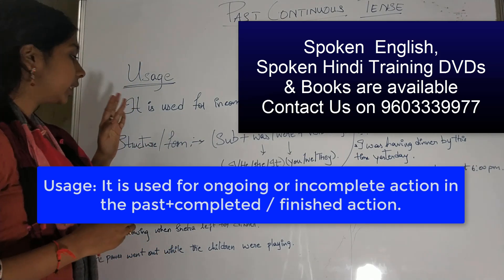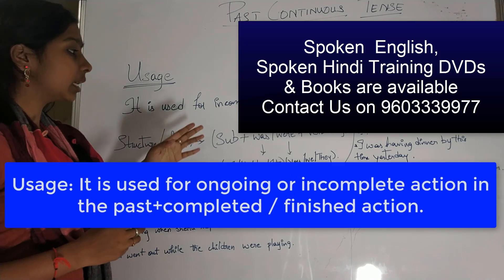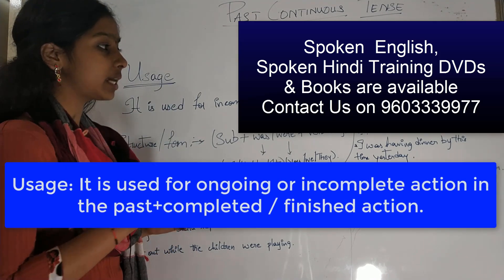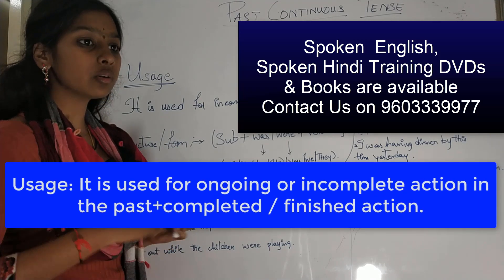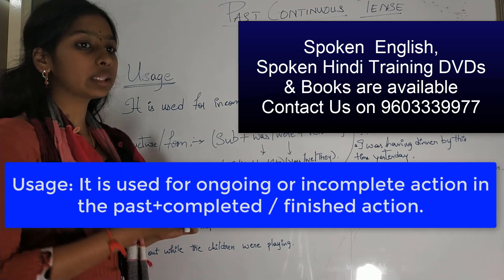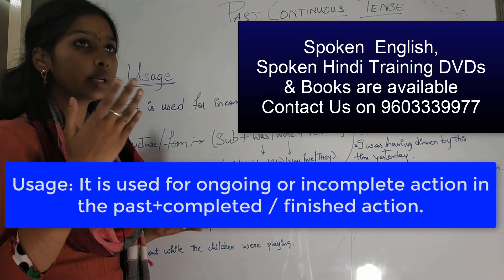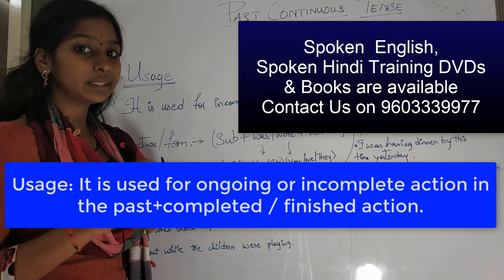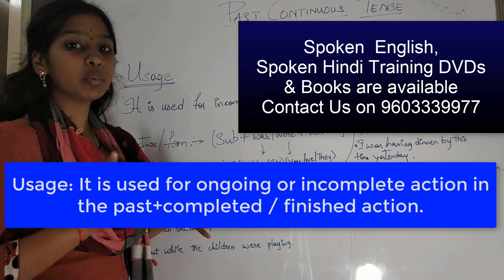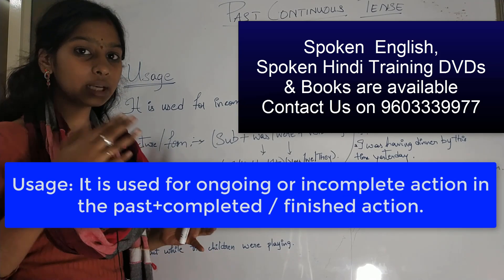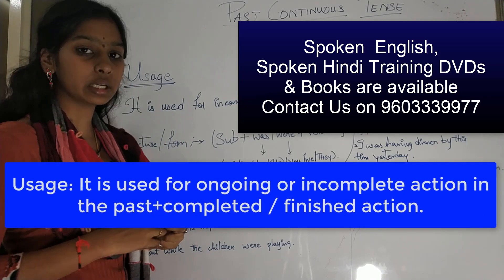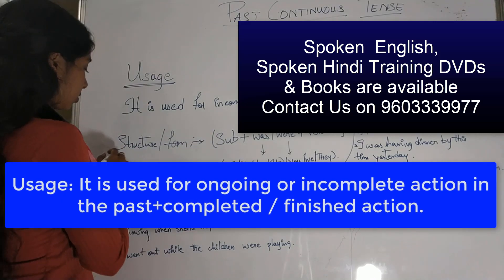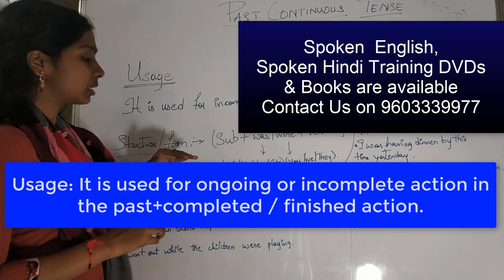The main usage of past continuous tense is: it is used for an incomplete or ongoing action in the past, plus a completed or finished action. The structure and form are used in the past continuous tense.